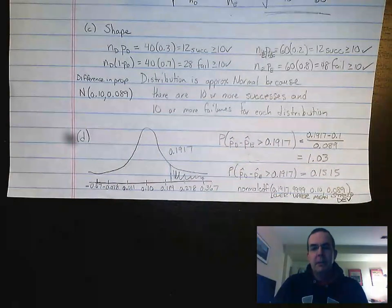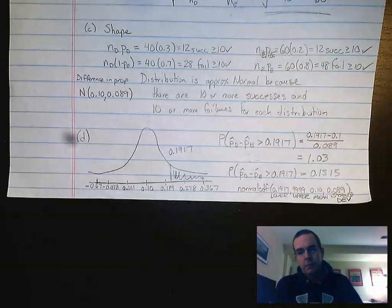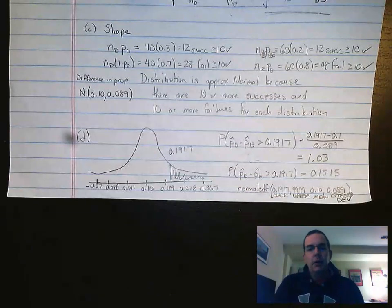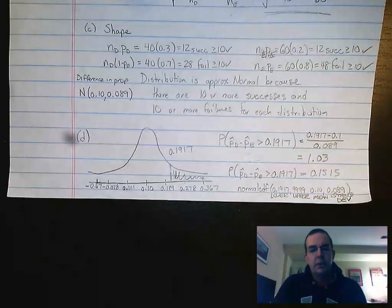So therefore, we can describe that shape as approximately normal. So we've now covered the shape, center, and spread of the distribution. And we're going to go ahead and move forward with part D to answer the final question.